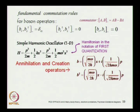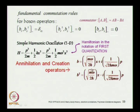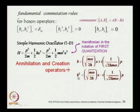We introduce creation and destruction operators — destruction operators are also often referred to as annihilation operators. These operators are defined as linear superpositions of x and p. The coefficient of x is root(m·omega / 2·h-bar) and i times 1/root(2·h-bar·m·omega) is the coefficient of p. When you construct this summation you get the destruction operator b; taking its adjoint, replacing plus-i with minus-i, gives b-dagger. These are respectively the destruction and creation operators.